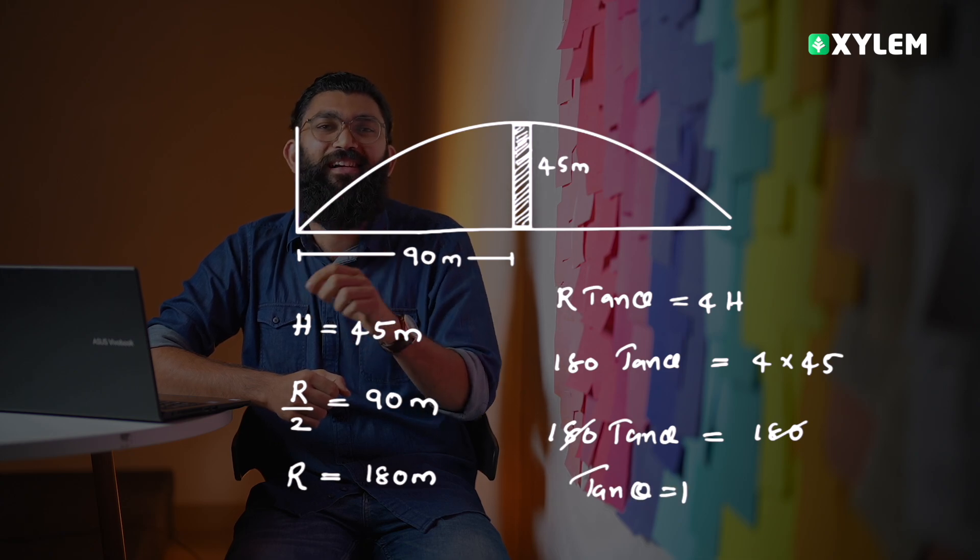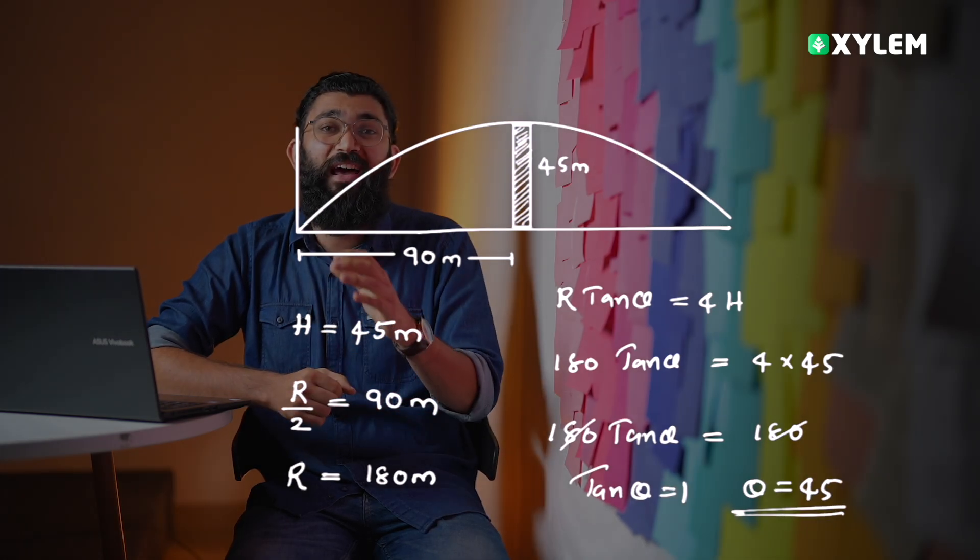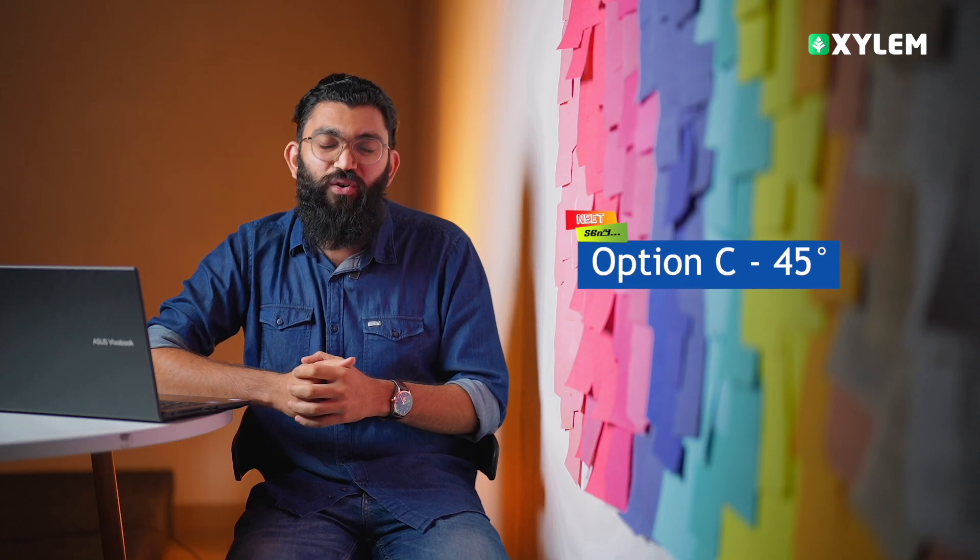Tan theta equals 1 and theta equals 45. So our correct choice is option C, 45 degrees.